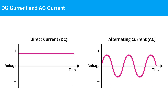Let us understand AC, alternating current, and DC, direct current. AC is a type of electrical current that periodically reverses direction, and it is commonly used for powering homes, businesses, and industrial machinery. It is generated at power plants, transmitted over long distances through power lines, and distributed to homes and businesses for various electrical applications.